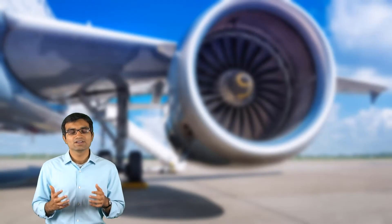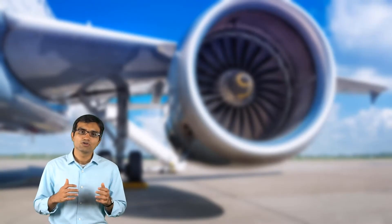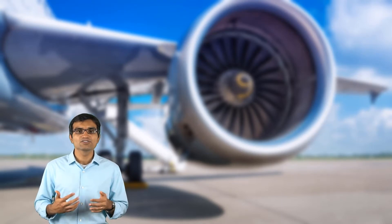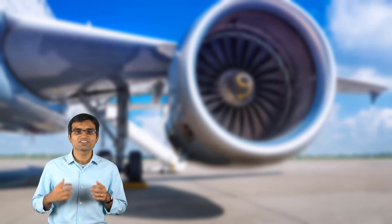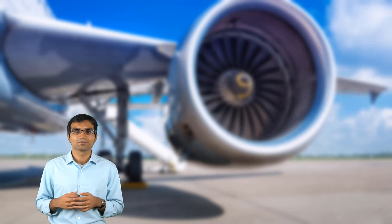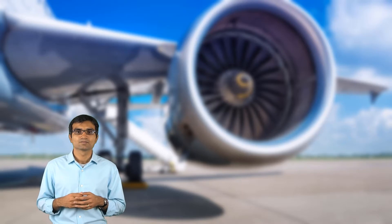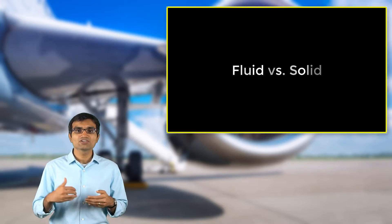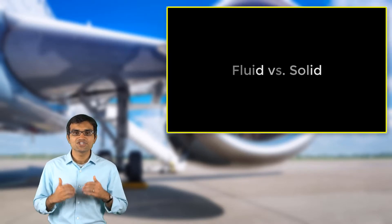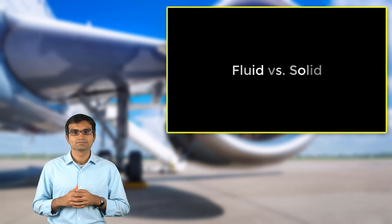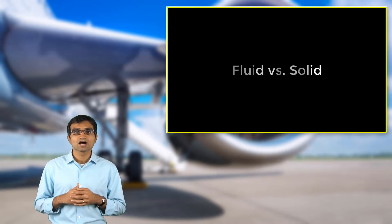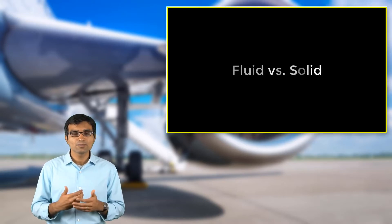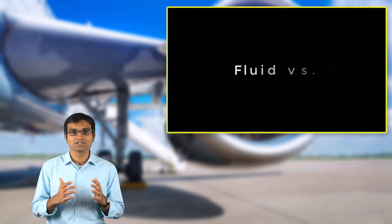Before venturing further into this course, let us first introduce a fluid and discuss some of its properties. A fluid is a material which cannot resist shear without moving. A solid, on the other hand, resists deformation initially.